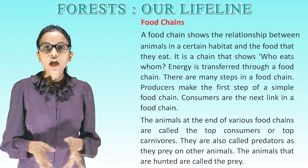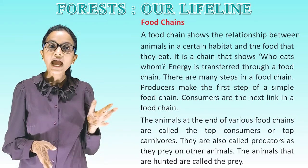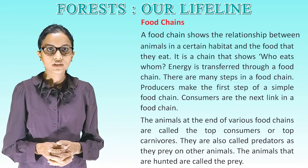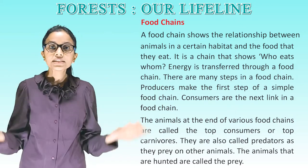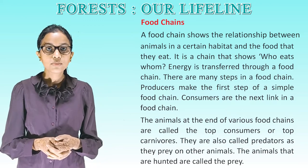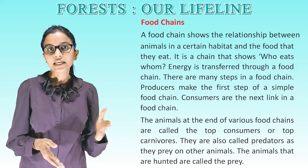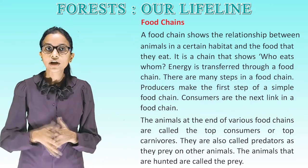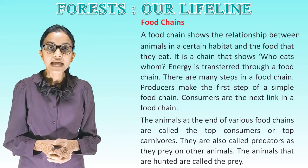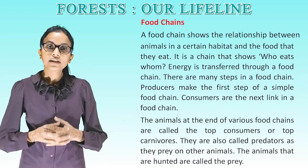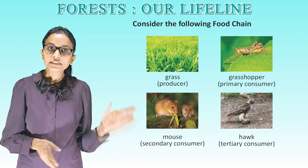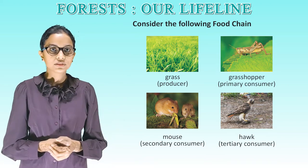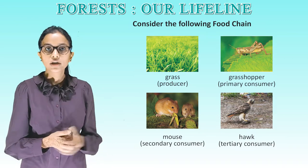Food chains: A food chain shows the relationship between animals in a certain habitat and the food they eat — it is a chain showing who eats whom. Energy is transferred through a food chain. Producers make the first step; consumers are the next link. The animals at the end of food chains are called top consumers or top carnivores, also called predators, and the animals that are hunted are called prey. Example: Grass (producer) → Grasshopper (primary consumer) → Mouse (secondary consumer) → Hawk (tertiary consumer).